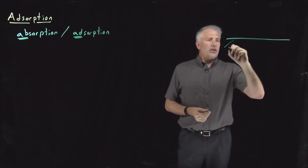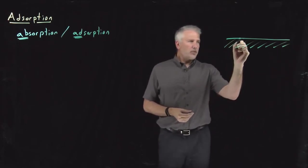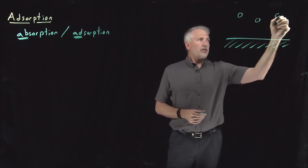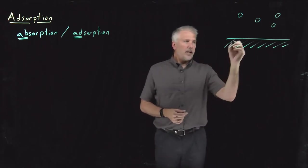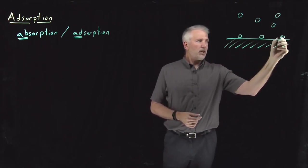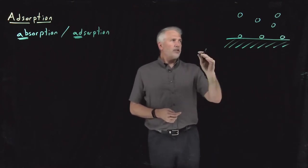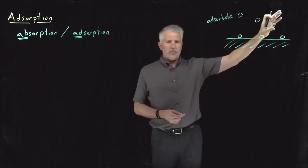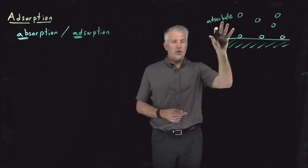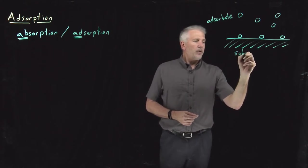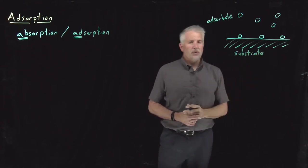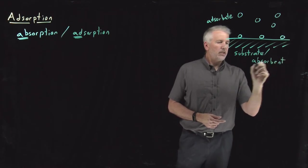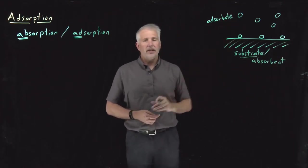I can draw a cartoon of what I mean. I've got some sort of surface, perhaps this glass lightboard. I've got some molecules in some phase near that surface, and I've got some molecules that have adsorbed or stuck onto the surface of the substrate. The species that have not been adsorbed onto the surface are called the adsorbate species. What they're adsorbing onto is often called the substrate or perhaps the adsorbent.